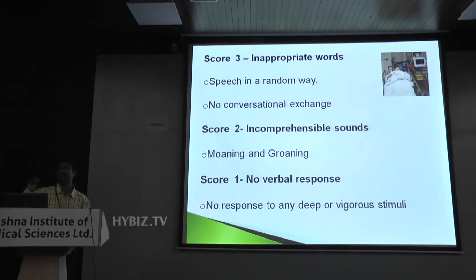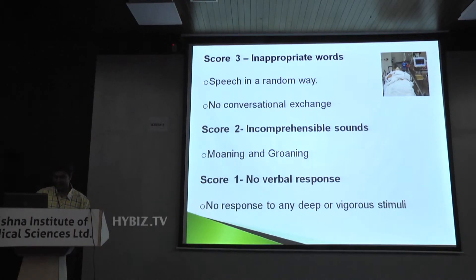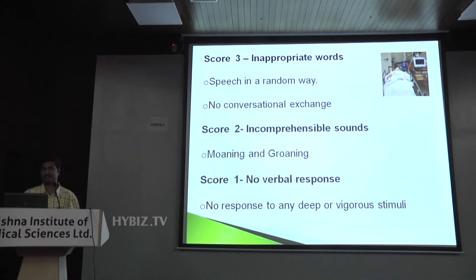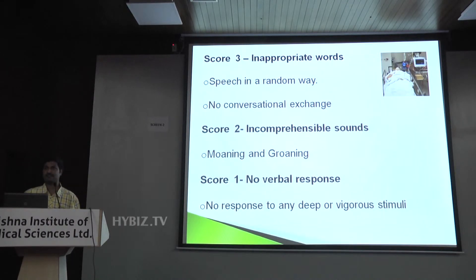Only a few syllables, letters, or sounds — this gives a score of V2. And as usual, V1 is no response. Now you have all three scores for eye opening, verbal response, and motor response. You add the three of them to give the total score.